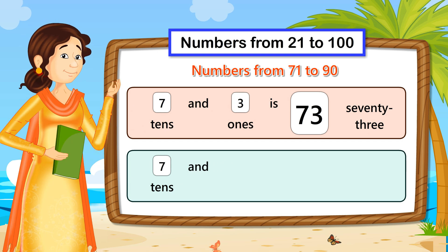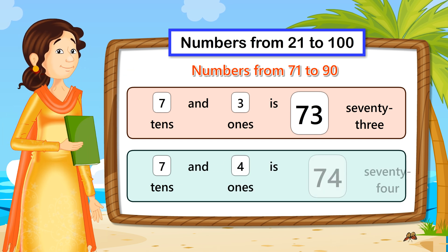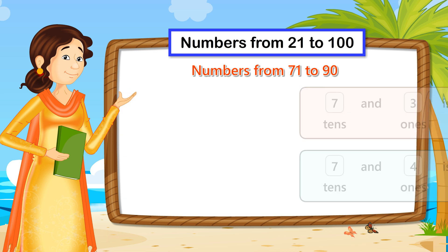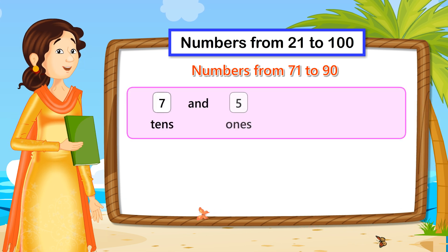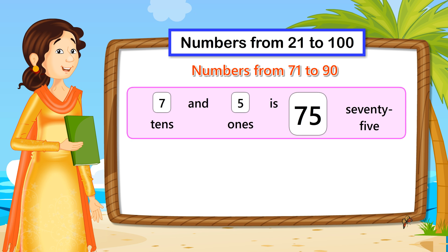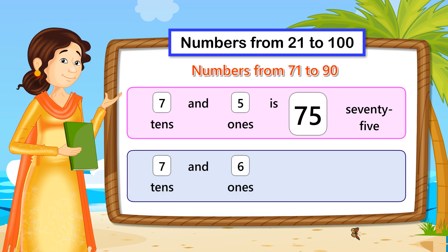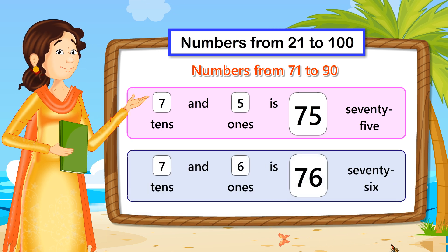7 tenths and 4 ones is 74. 7 tenths and 5 ones is 75. 7 tenths and 6 ones is 76.